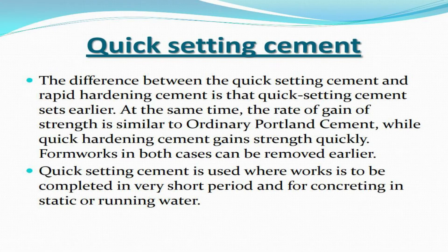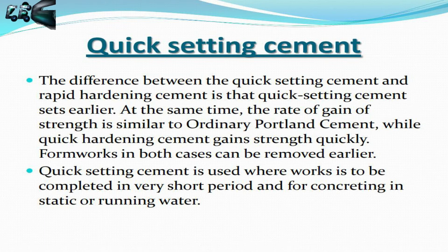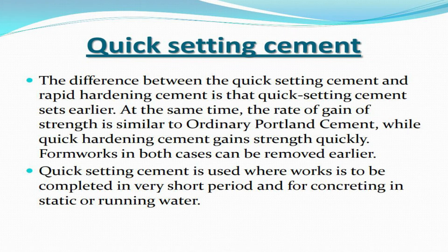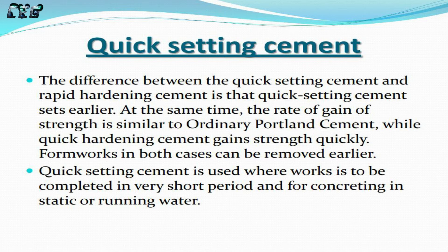The difference between quick setting cement and rapid hardening cement is that quick setting cement sets earlier, while the rate of gain of strength is similar to Ordinary Portland Cement. Quick hardening cement gains strength quickly, and formworks in both cases can be removed earlier. Quick setting cement is used where work is to be completed in a very short period and for concreting in static or running water.